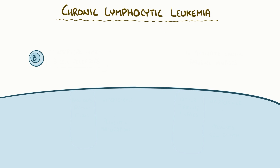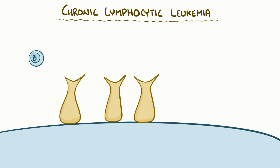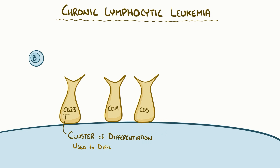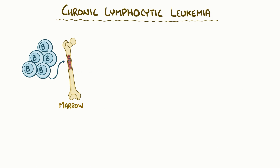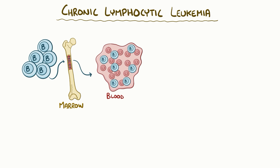These premature cells always express particular proteins on their surfaces, including CD5, CD19, and CD23. The 'CD' part stands for cluster of differentiation, because these are common surface proteins which can be used to differentiate between the lymphocytes. And despite CLL cells being B lymphocytes, they express the CD5 protein, which is a lot more common in T lymphocytes. These premature leukocytes build up in the bone marrow and eventually spill into the blood, like in CML.